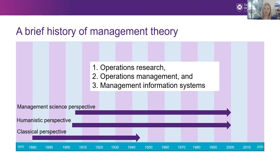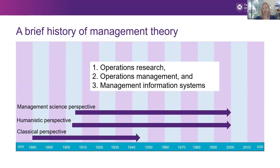The management science perspective emerged to treat problems of global warfare during the Second World War. This view is distinguished by its application of mathematics, statistics, and other quantitative techniques to management decision-making and problem-solving. Groups of mathematicians, physicists, and other scientists were formed to solve military problems involving moving massive amounts of materials and large numbers of people quickly and efficiently — techniques that had obvious applications to large-scale business firms. Enhanced by the development of computers and a growing body of statistical techniques, the quantitative approach is widely used today. The management science area has three subsets: operations research, operations management, and management information systems.